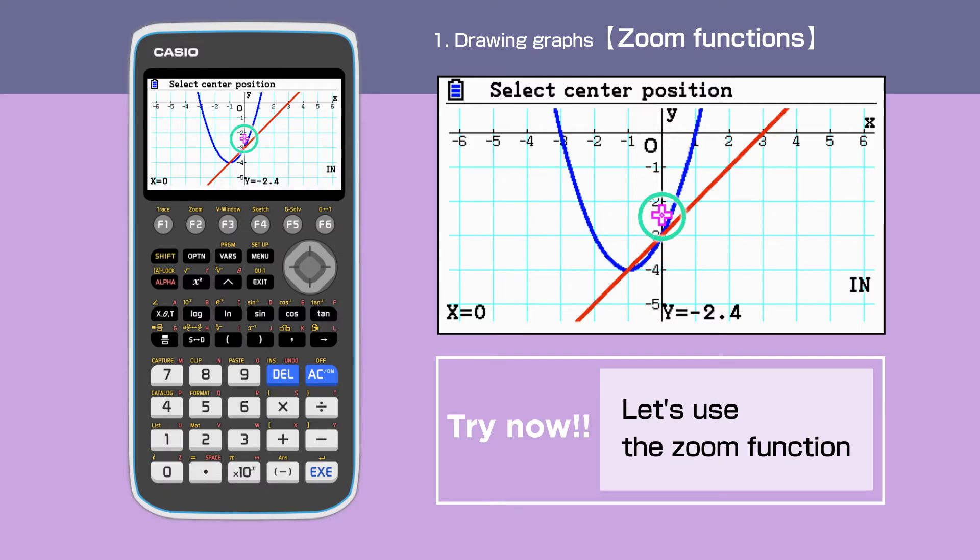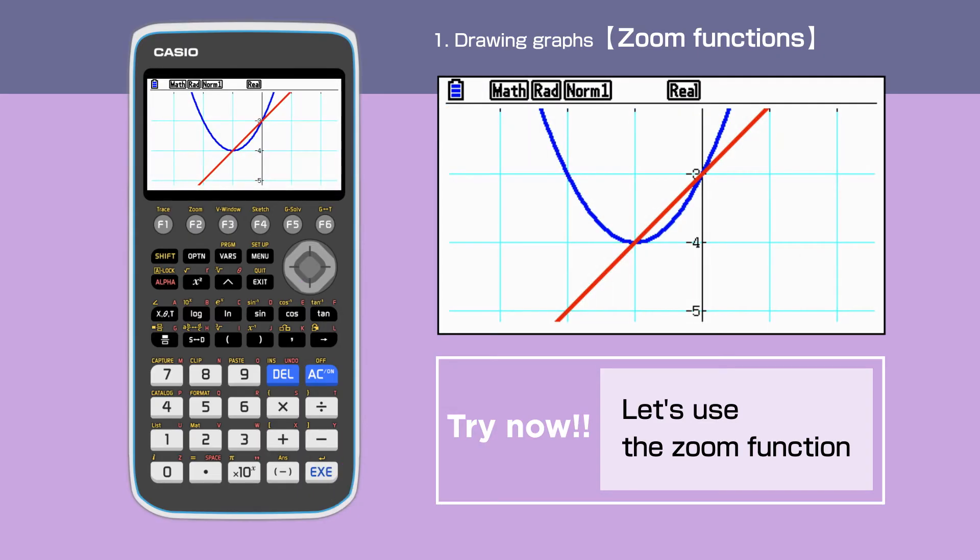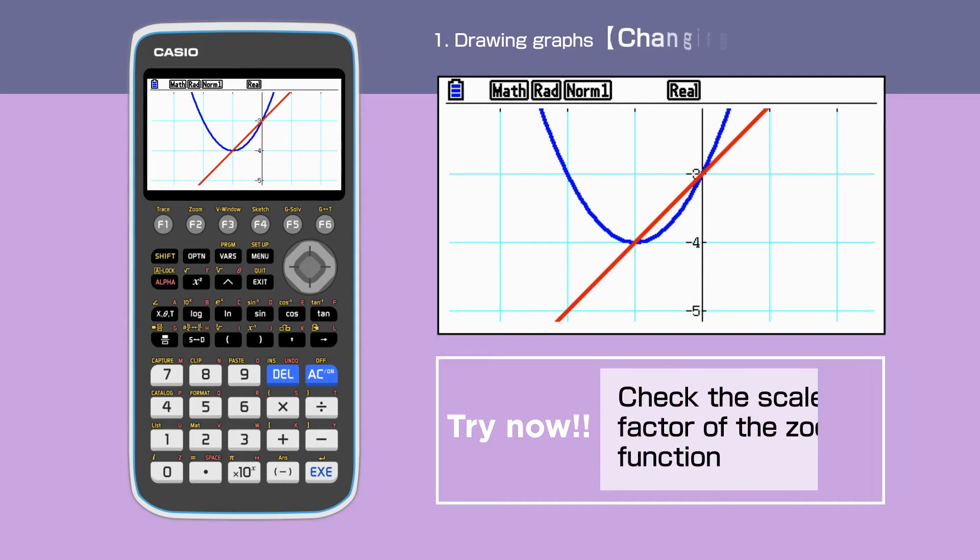Move the pink cursor close to one of the intersections and press Execute. The graph has been enlarged. The scale factor was 2 for this example.